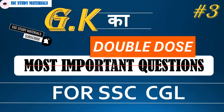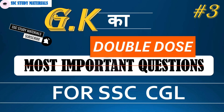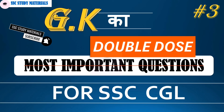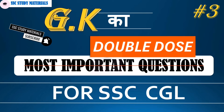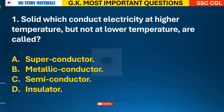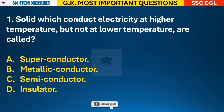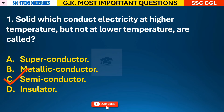Hello everyone, welcome back to my channel SSC Study Materials. In today's session we are going to learn questions and answers on Static GK. I have taken 100 questions which are very important for your upcoming SSC CGL exam, and this is part 3 of the series. Question 1: Solids which conduct electricity at higher temperature but not at lower temperature are called? Answer C - semiconductor.